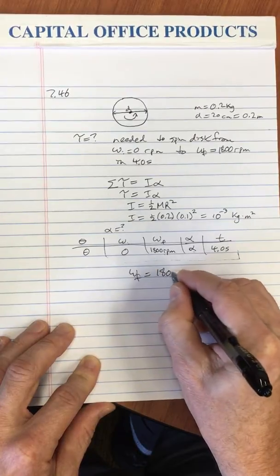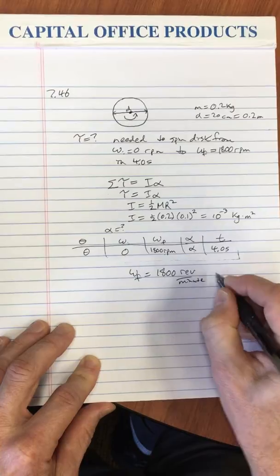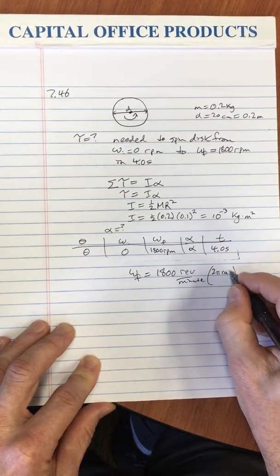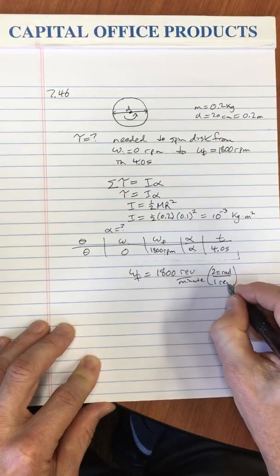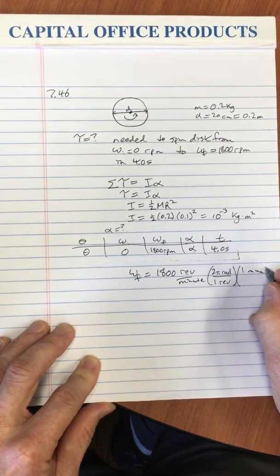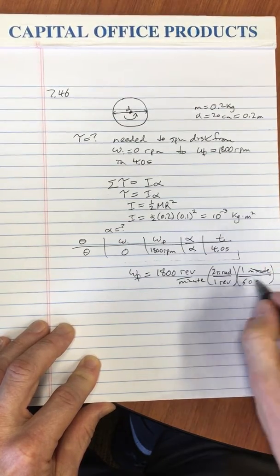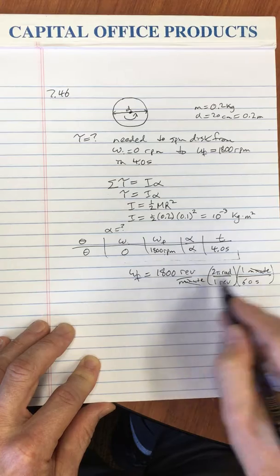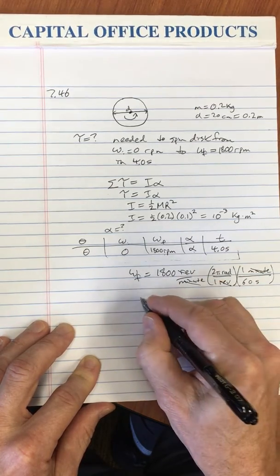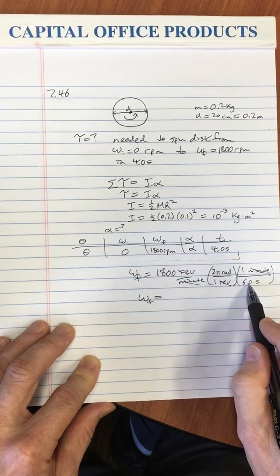So omega f is 1800 revolutions per minute, and that gets converted into 2 pi radians equals one revolution, and one minute equals 60 seconds. So I put my unit conversion factors there, the minutes cancel, the revolutions cancel, and omega f is 1800 times 2 pi divided by 60.